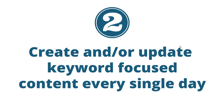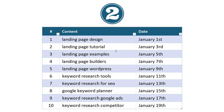Number two is to create and/or update keyword-focused content every single day. If there's anything I can get across to you, it's that consistency with creating content is key. As you do your keyword research and come up with your content strategy, the next step is to consistently create content every day. The best way to do this is to come up with some sort of content calendar. You could plan content like 'five landing page designs you can learn from' or 'landing page tutorial for beginners,' dating each piece of content throughout the entire year.